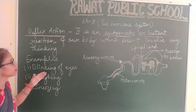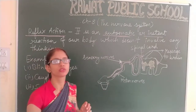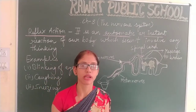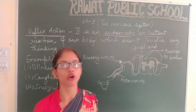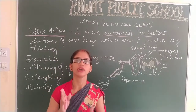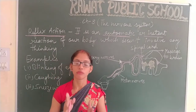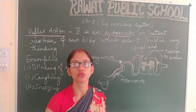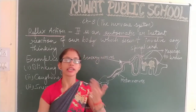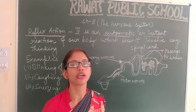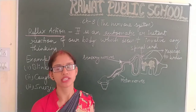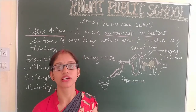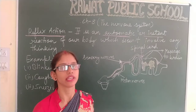If we talk about reflex action — if we touch any hot object by mistake, then from our hand the message is sent to the spinal cord through the sensory nerves, and again from the spinal cord through the motor nerves, the message is sent back to our hand and it helps us in removing our hand from that particular area.